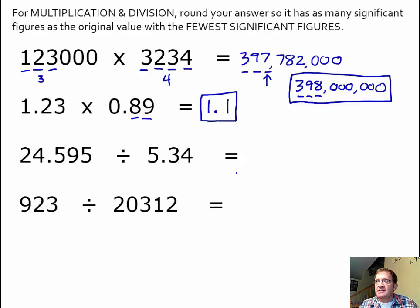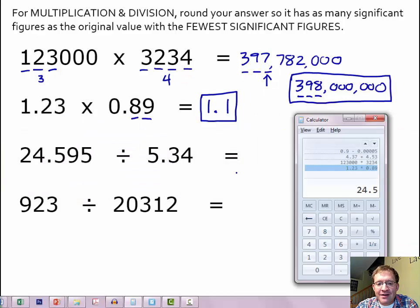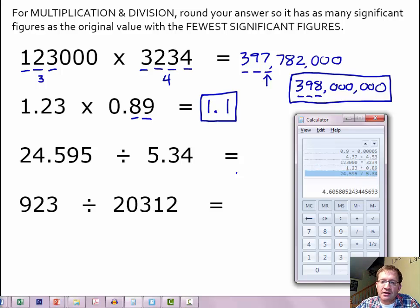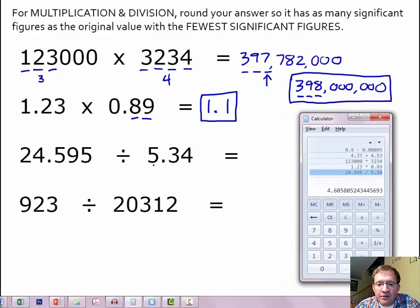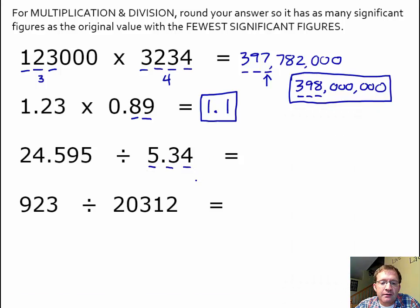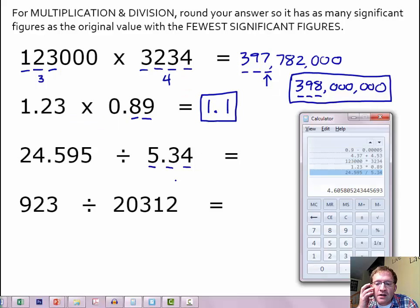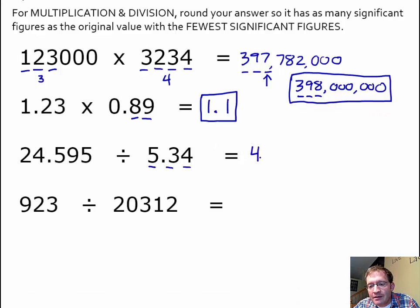On our next example in division — it's exactly the same, just watch for the division symbol. 24.595 divided by 5.34 gives us 4.6580524. Our answer may have only three significant figures because 5.34 has 1, 2, 3 significant figures. The other value has 5, but that's more. 5.34 with just three significant figures is our limiting number. So I'll round 4.6580524 to three significant figures: 4.61 — rounding the 0 up to a 1. So 4.61 has three significant figures.